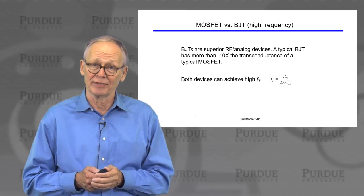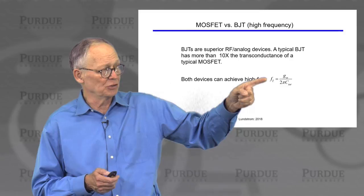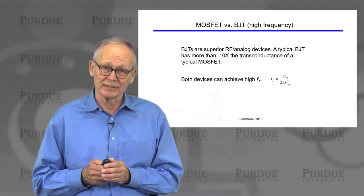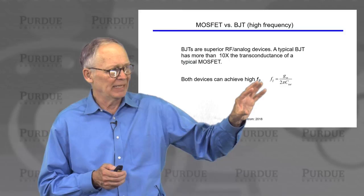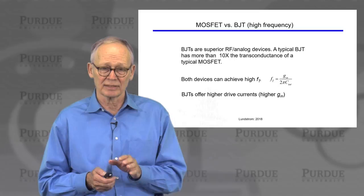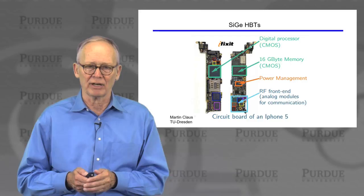Both bipolar transistors and MOSFETs have achieved terahertz performance. The unity gain bandwidth product F_T is transconductance divided by 2π times the total device capacitance. For MOSFETs, the capacitance can be very low, so even though the transconductance is low, good F_T can be obtained. For bipolars, the capacitance tends to be higher, but the transconductance is much higher, so you can also achieve comparable F_Ts. The thing bipolars offer is very high transconductance, which makes them well suited when you need a lot of drive current and high power RF amplifiers.